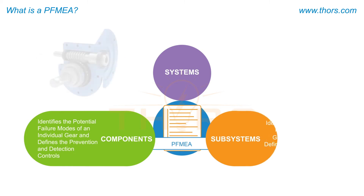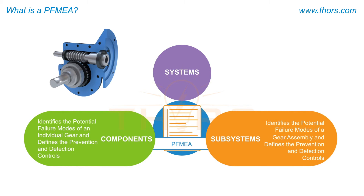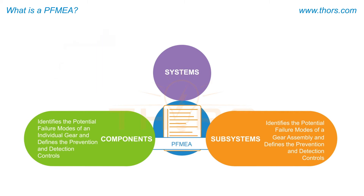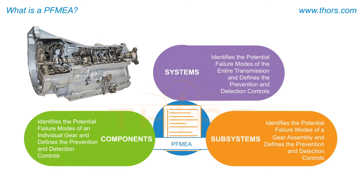The subsystem PFMEA identifies the potential failure modes of a gear assembly and defines the prevention and detection controls associated with it. The system PFMEA identifies the potential failure modes of the entire transmission system and defines the prevention and detection controls associated with it.